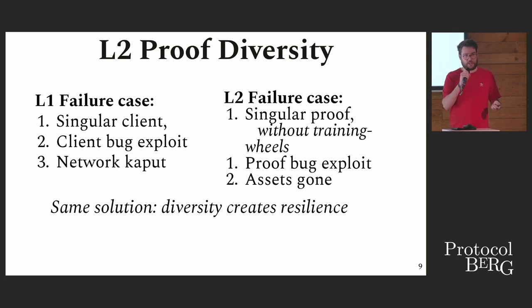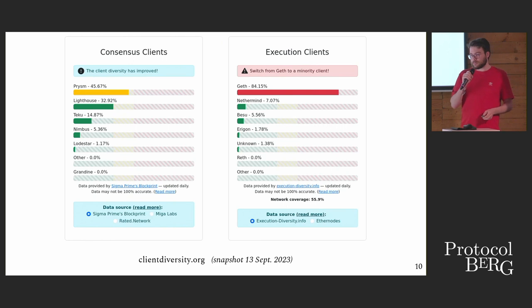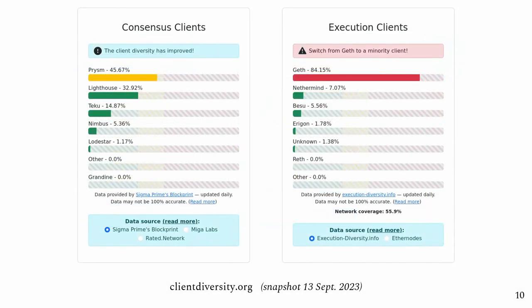This is great for resilience in terms of uptime, but also for the on-chain proofs that secure layer two states. This is the state of layer one client diversity — we're getting there. Increasingly, we see more clients pop up, though the picture can still look a lot better. With layer two right now, we're in a very similar state where every rollup has one proof, and I think this is a bad start. We want to be in a place where there are multiple clients securing the system.